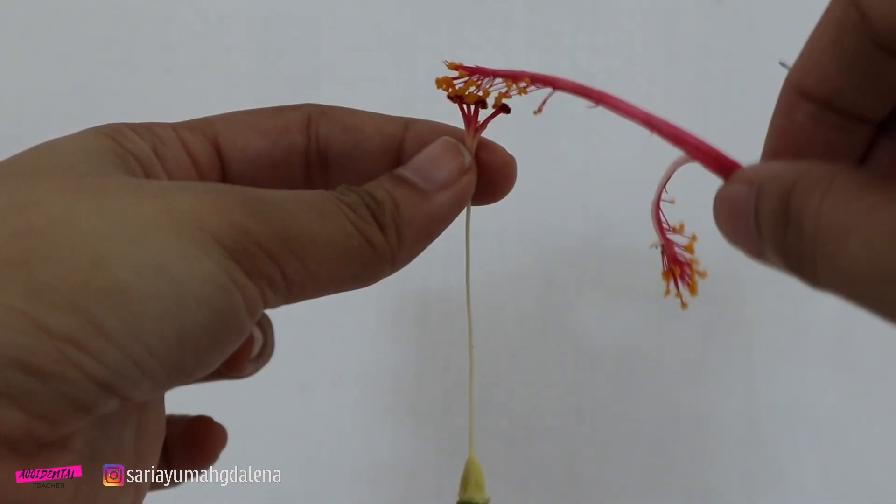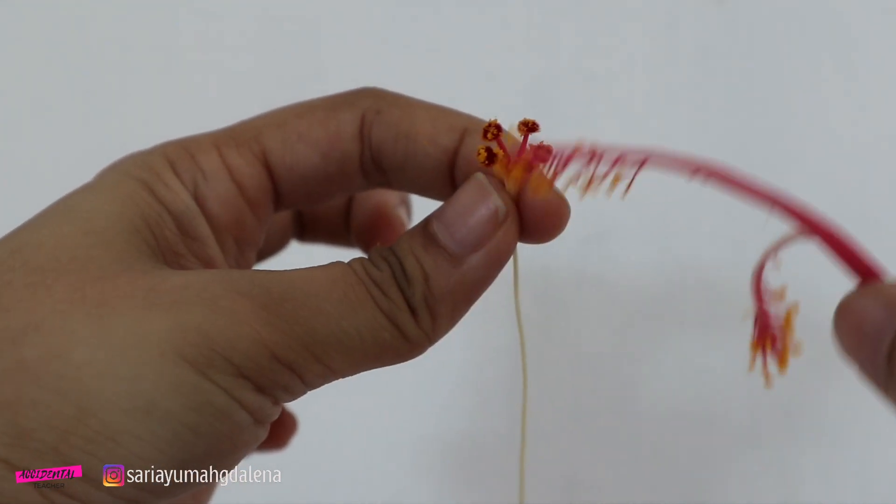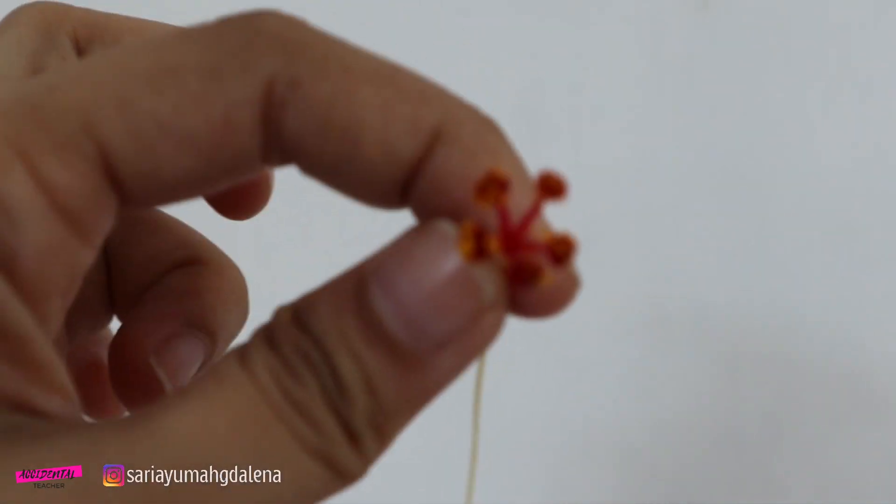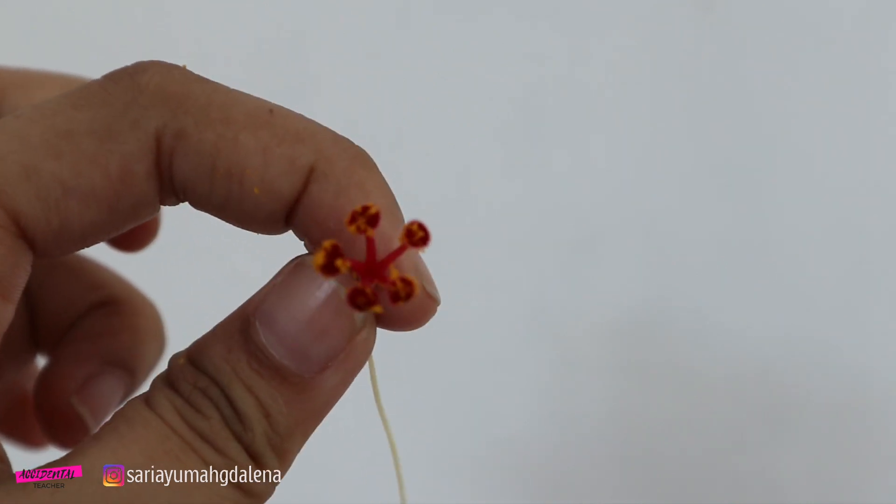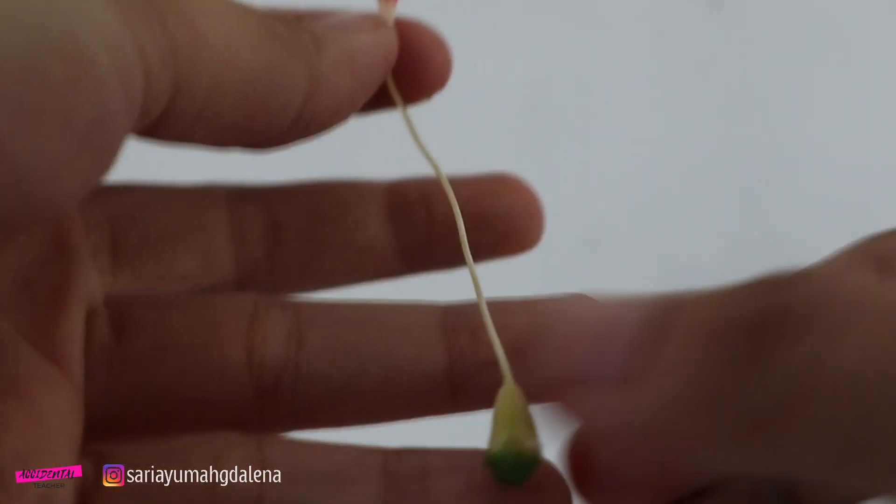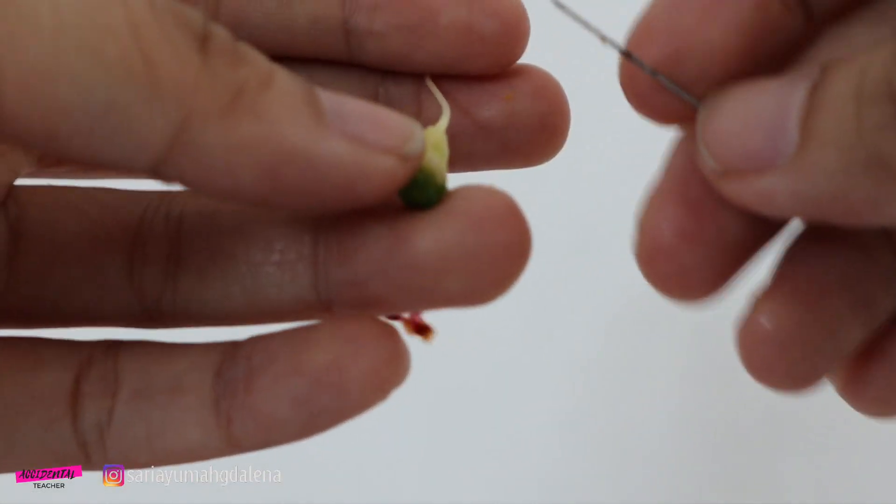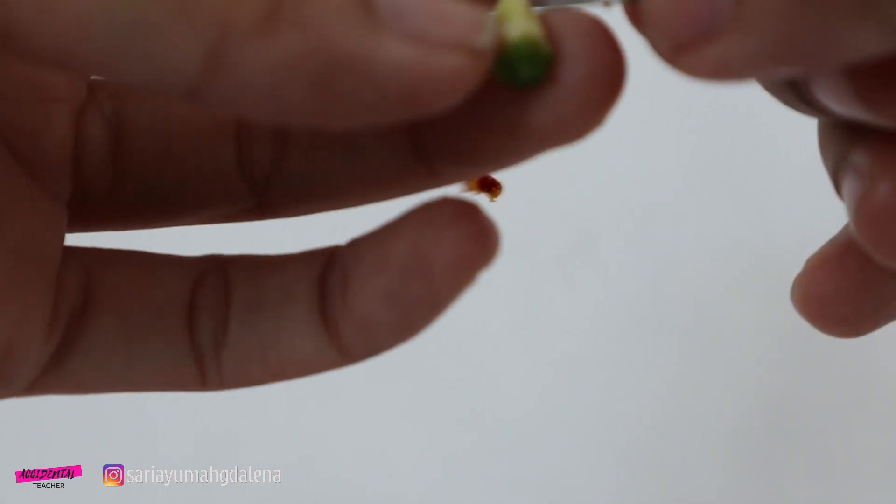If the pollen grains arrive on the stigma, the stigma then will absorb it and pass it through the tubes into the ovary, and then goes to the ovule which contains the female reproductive part called the egg.